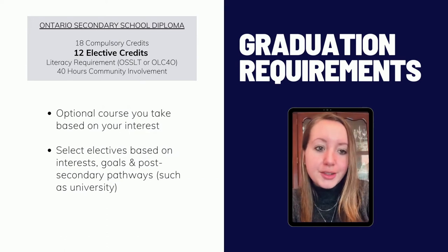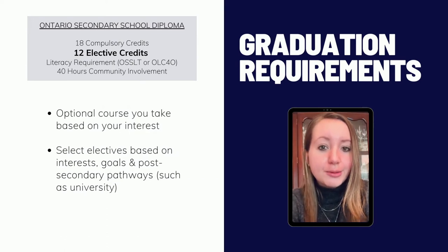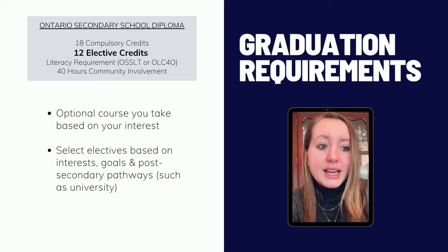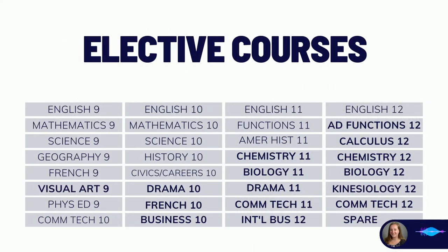Aside from the 18 compulsory courses, students are also required to complete 12 elective credits. These elective credits are chosen by the student based on their own personal interests as well as to fit their post-secondary goals. This chart demonstrates the progression of elective courses throughout a student's four years of high school. In grade 9 and 10, most of the courses are already populated for students, as these courses are required for the Ontario Secondary School Diploma.